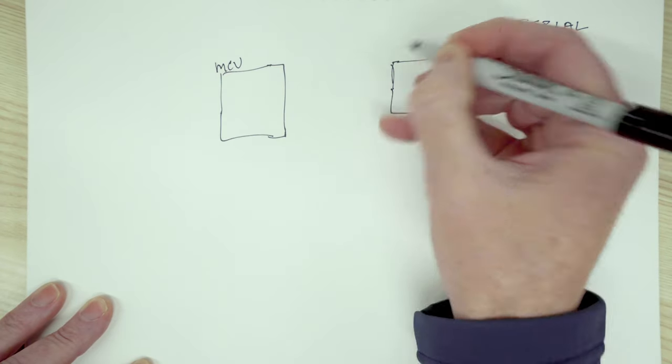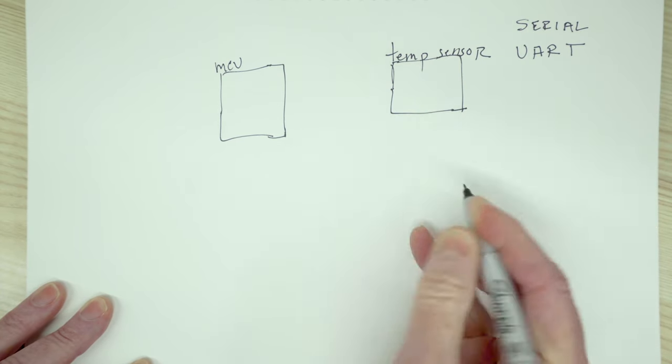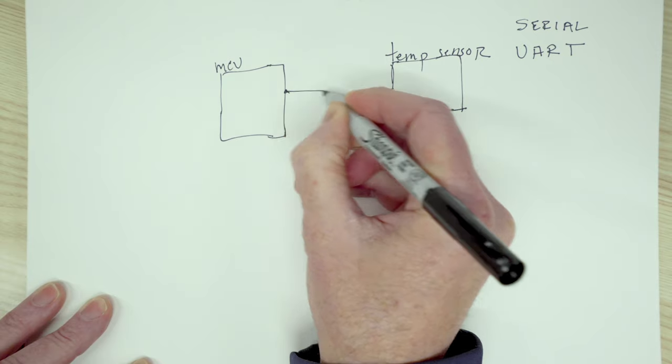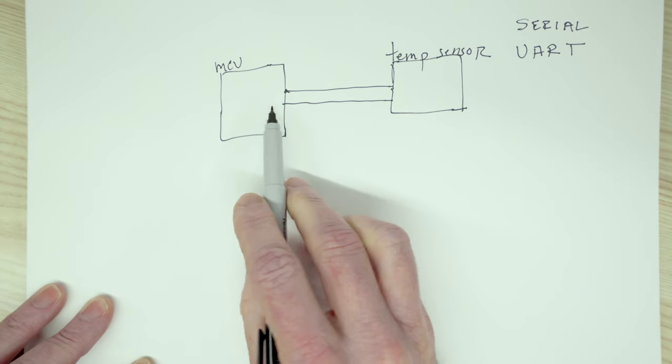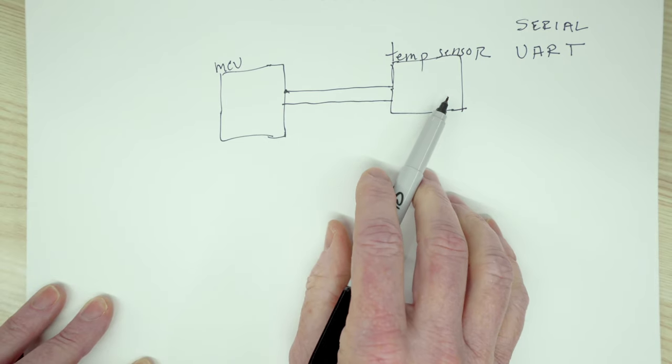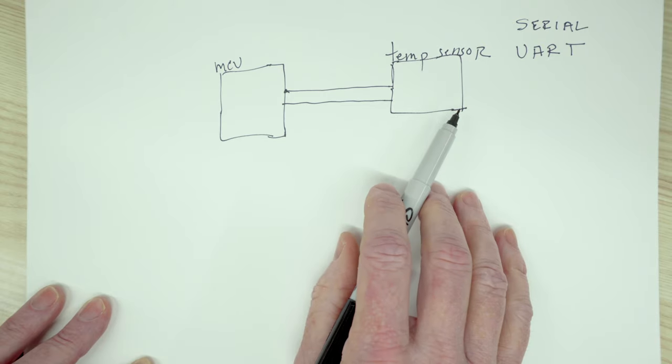So here we have a microcontroller and let's say here we have a temperature sensor. The way we're going to communicate is via two lines between the devices. Now, we only need one line if, for example, we're only reading data and we're not sending data. But in this example, I'm going to put both in here just to be more complete.